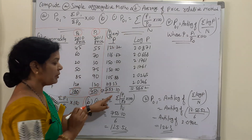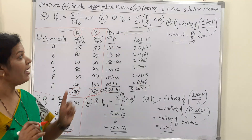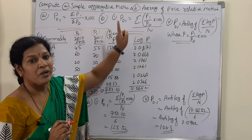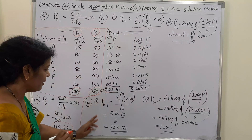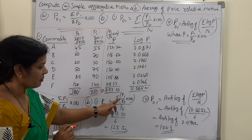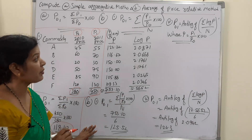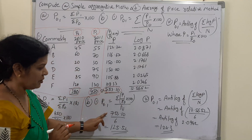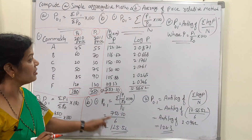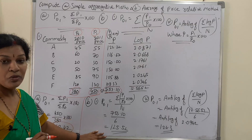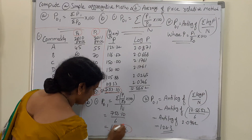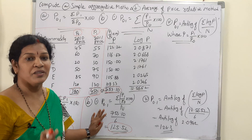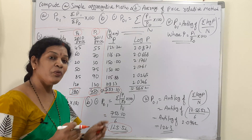After totaling all the price relatives, we get Σ(P₁/P₀ × 100) = 753.10. Applying the formula: P₀.₁ = 753.10 / n, where n = 6 (number of observations). So P₀.₁ = 753.10 / 6 = 125.53. This is the result using the index number method.